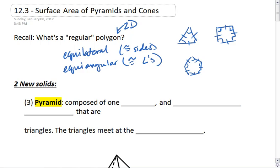A pyramid is one of our new solids we're going to talk about. A pyramid is composed of one base and lateral faces, those are our side faces, that are triangles. The triangles meet at the vertex.